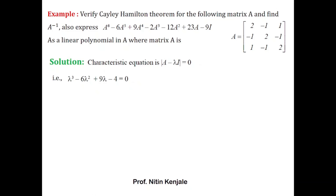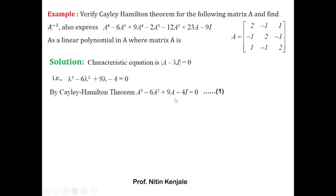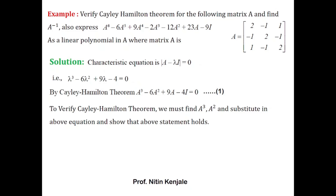By the Cayley-Hamilton theorem, matrix A should satisfy this equation. That means if I replace λ by A, we have A³ − 6A² + 9A − 4I = 0. This equation should hold — I label it as equation (1). We have to verify this, meaning we have to prove that LHS equals RHS. In the LHS we have A³ and A² terms, so first we find A² and A³ and then substitute.